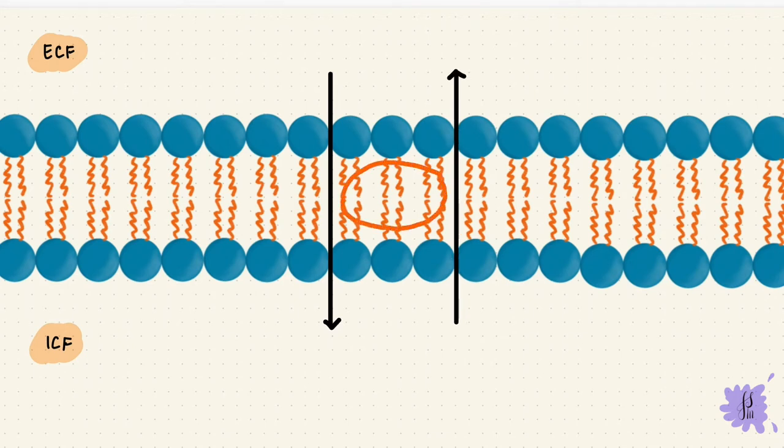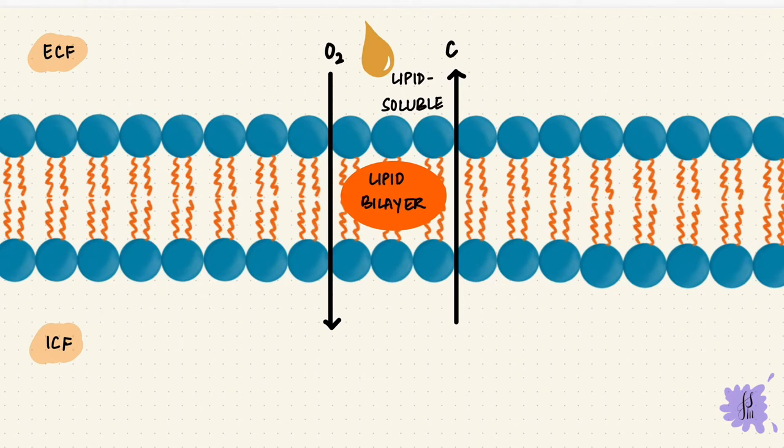But there's a barrier in between: the cell membrane. So for the substance to diffuse, they have to get through that membrane. The membrane is a lipid bilayer. So if it's something that's lipid-soluble, like oxygen and carbon dioxide, it can diffuse across the membrane from high to low.